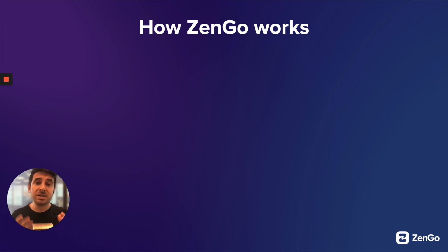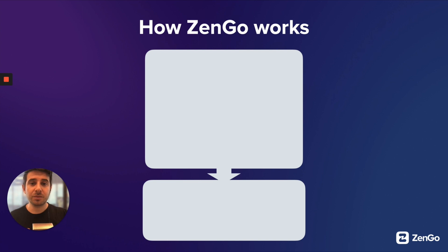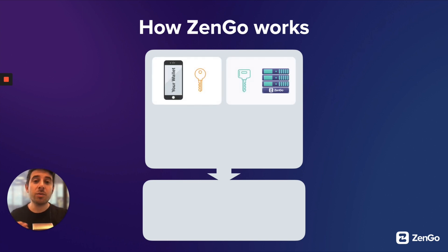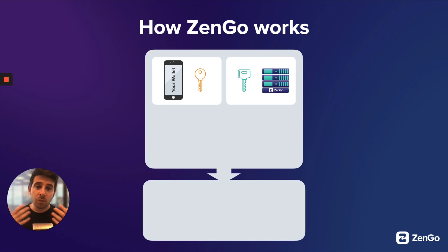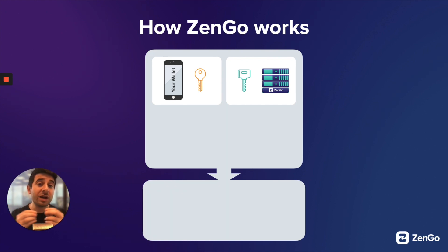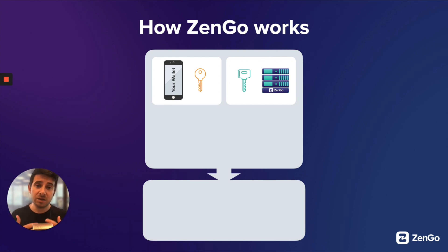Let's talk about how Zengo works as an MPC wallet. To start, there's no single point of failure. Instead of a seed phrase, Zengo has two secret shares — a two-of-two system. When you download Zengo for the first time, something happens simultaneously on your phone and on the remote Zengo server: each secret share is generated separately but simultaneously, one on your mobile device and one on the remote server. The two are then linked cryptographically and encrypted so that a man-in-the-middle attack would be recognized and shut down.